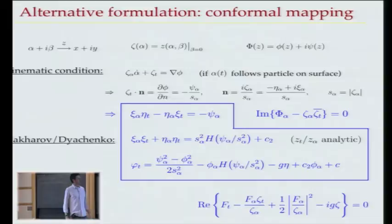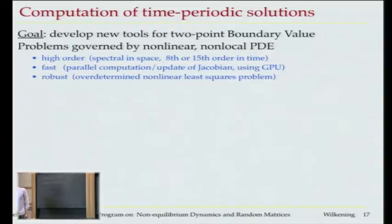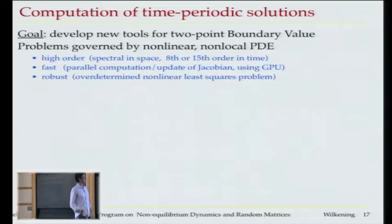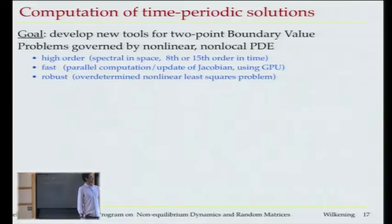It's really just a different way of solving the Laplace equation using a conformal map. One nice thing is you're just dealing with Hilbert transforms instead of solving those boundary integrals — that's why it's a fast method. In terms of computing time-periodic solutions, the key features of my methods are: spectrally accurate in space, eighth-order time-stepping in double precision, fifteenth-order in quadruple precision. They're fast because of parallel computation, using big machines at Lawrence Berkeley Lab.